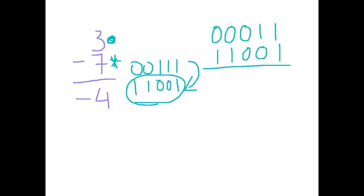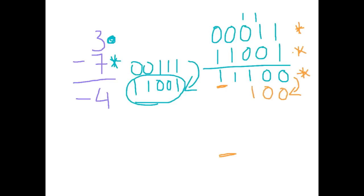We add the two together: 1 and 1 is 0 carry the 1; 1 and 1 is 0 carry the 1; 1, 0, and 0 is 1; 1, 0, and 1 is 1; 0 and 1 is 1. Now my solution has 5 bits and the leftmost bit is a 1 — it means it's a negative result. But I need to convert it to figure out what it's the negative of. Keep the same until the first 1, keep the first 1, change everything after. Place values 1, 2, 4, 8, 16 — it's a 4, so this number is a negative 4.